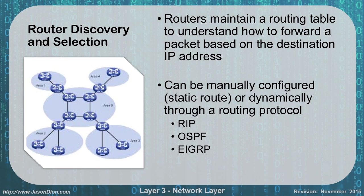Think of it like pulling up Waze to get to DC — it figures out the fastest way based on current conditions and traffic. In the old days you'd use an atlas for the shortest route by miles, or MapQuest which would always say get on I-95 south, even if there's a huge accident. With dynamic router discovery and selection, it can automatically update based on routers being up or down, traffic jams on the network, and reroute accordingly. Using dynamic protocols is usually the best option, though there are cases where you'll want a static route.